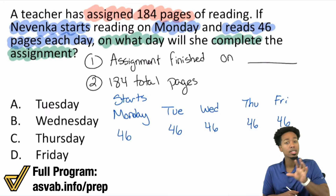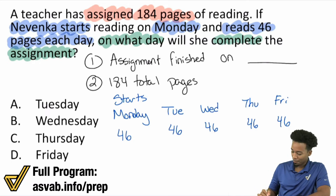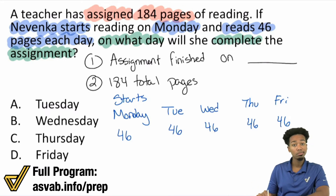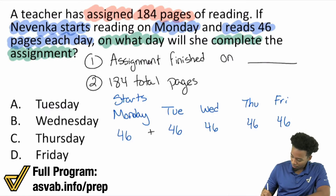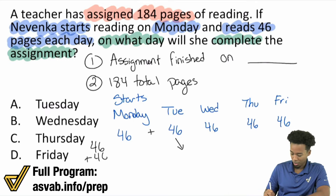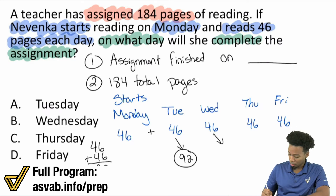I'll show you the faster method in a moment. But with the caveman method: 46 plus 46 is 92 — so we have 92 total on Tuesday. Add another 46: 92 plus 46 is 138. You've got to know your mental math a little bit, or just do it by hand — either way is fine.